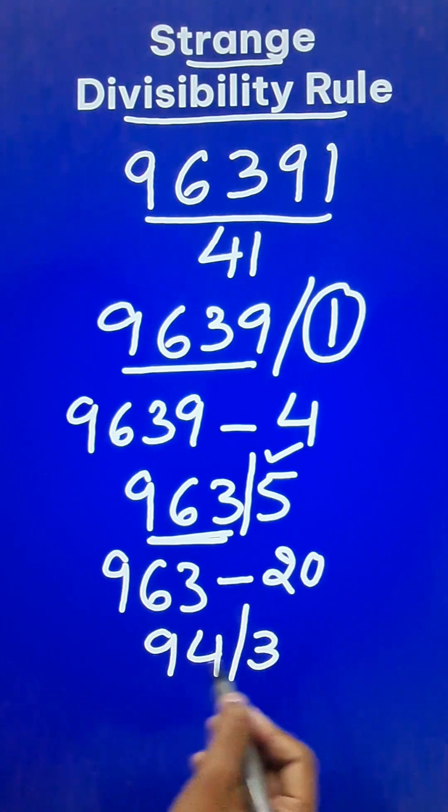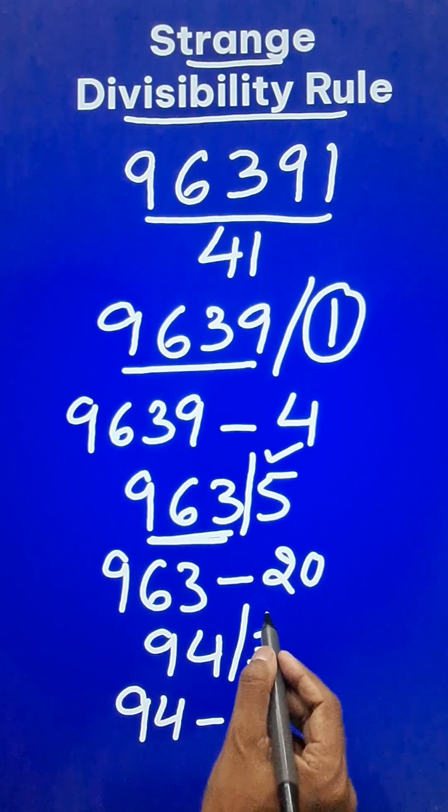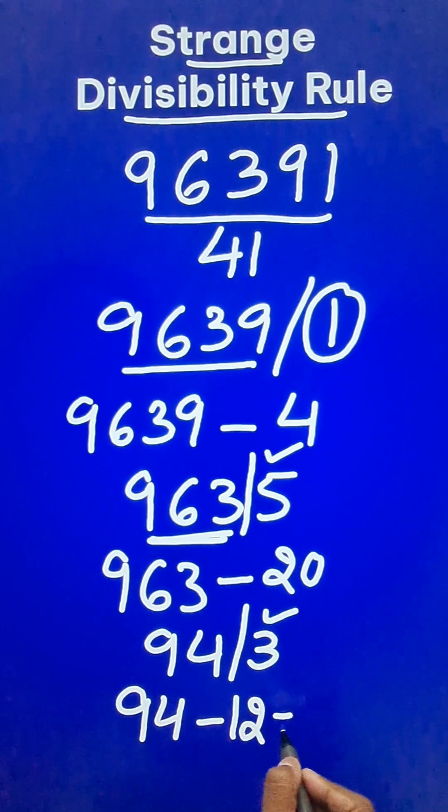Now you can separate out the last digit again. So you get 94 minus 4 times 3 is 12 and that gives you 82.